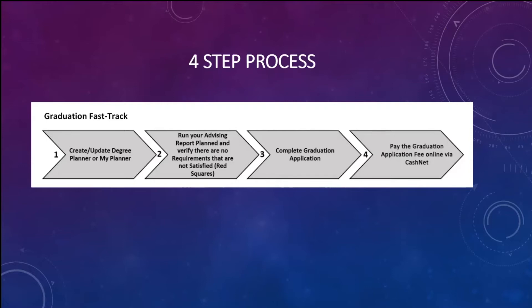We've gone through a good chunk of this process, but it is a four-step process. Step one: update your degree planner — make sure it's all filled out. Step two: run your advising report plan to verify you're not missing anything. If it says you're missing something but you're not, that goes on the second page — though I think 90% of you will not need that page. Step three: complete the grad application, which is just that one page and the potential second. Step four: pay the fees via CashNet and submit everything to the graduation office. We'll provide their email at the very end.